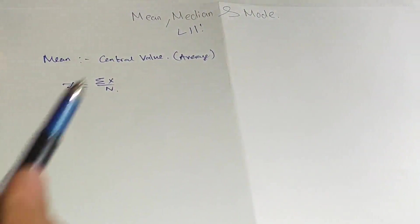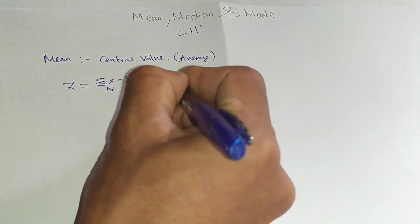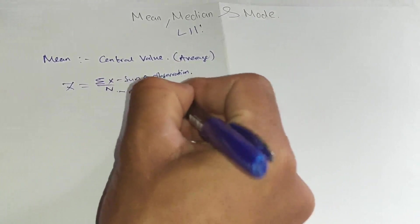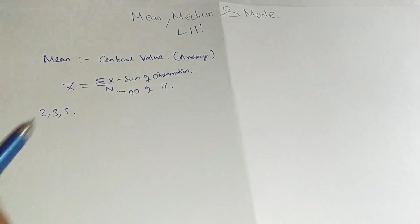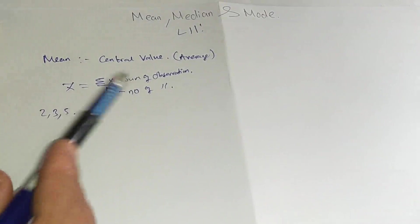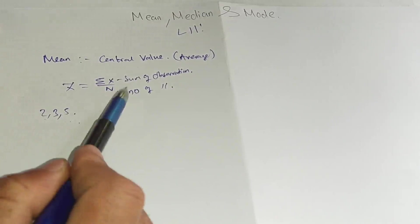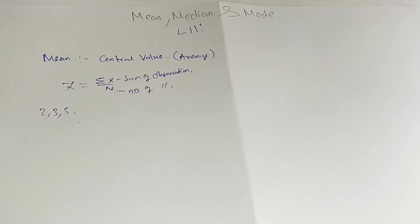In this formula, the number of observations — sigma X stands for the sum of observations, and n stands for the number of observations. So X-bar, which represents the mean, equals sigma X divided by n. For example, if the sum of observations is 10 and there are 3 observations, n equals 3.